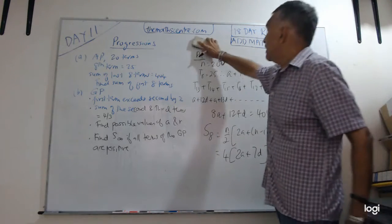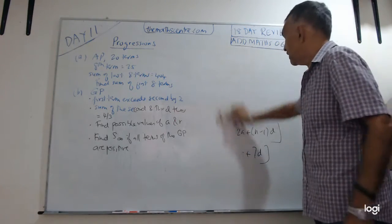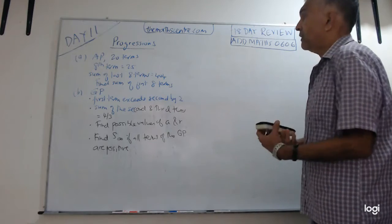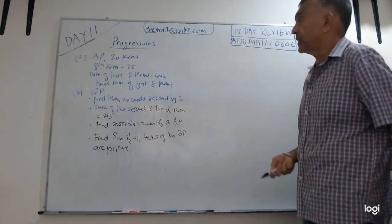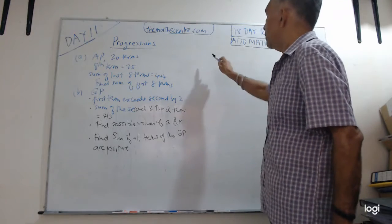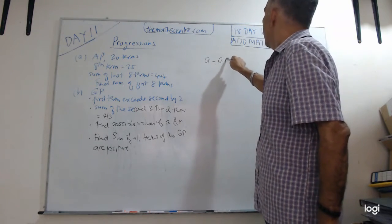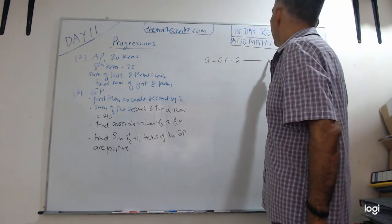Let me just say a few words about geometric progression part B. I'll set it up for you and then you can look at the solution. Geometric progression. The first term exceeds the second by 2. First term exceeds the second term by 2.